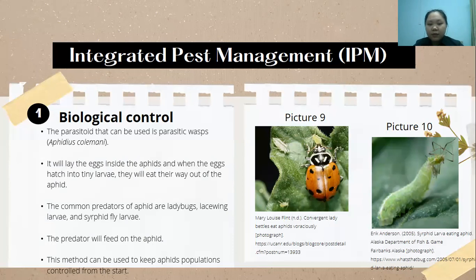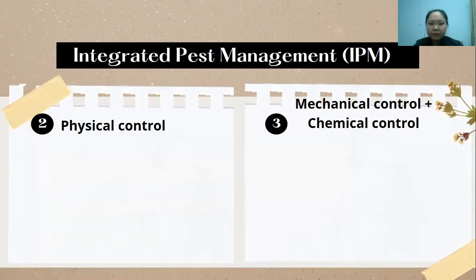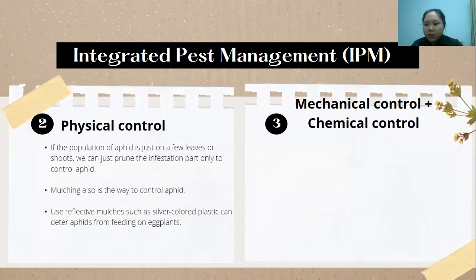The second method is physical control. We can prune the leaves or stems infected by aphids. We can also do mulching using silver-colored plastic, which can deter aphids from feeding on the eggplants.